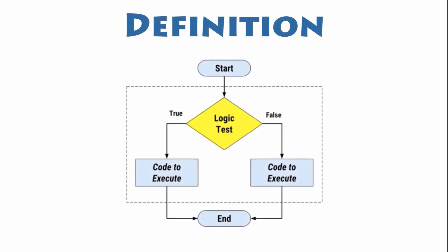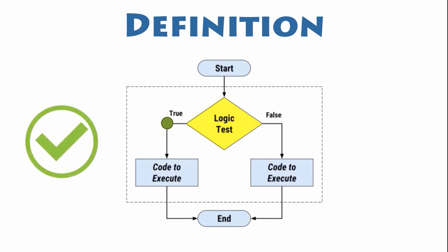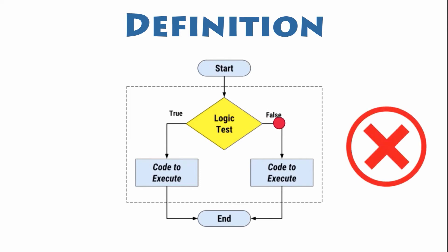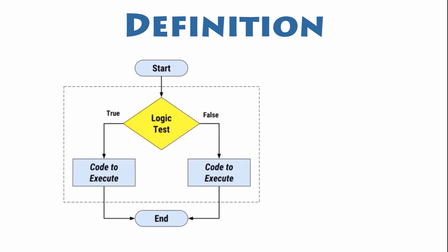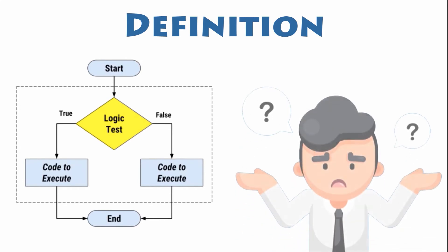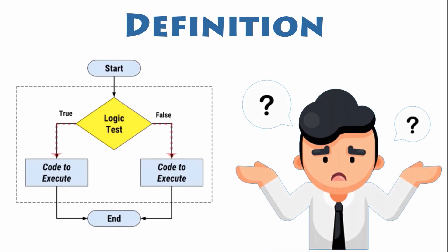In programming languages, most of the time you want to control the execution flow of your program, since you want to execute some set of statements only if a given condition is satisfied, and a different set of statements when it is not satisfied. Conditional structures are also known as decision-making statements. A decision is when a program has more than one choice of actions, depending on a variable's value.